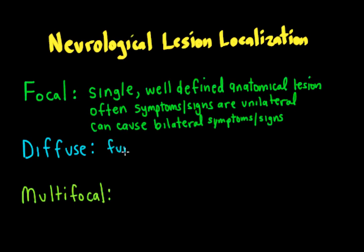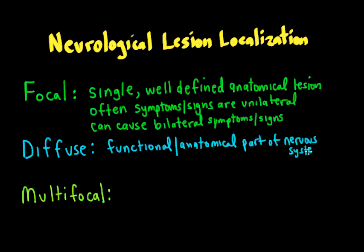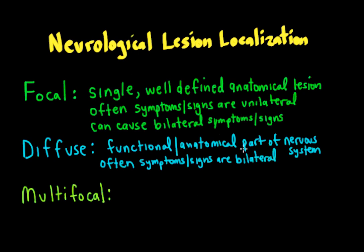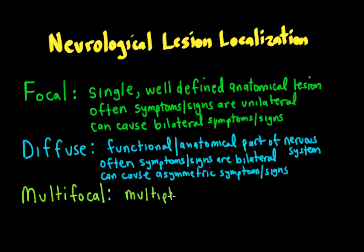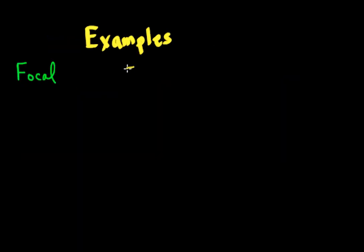For diffuse lesions, these affect a functional or anatomical part of the nervous system. Usually, since nervous system parts have a right and left, diffuse lesions produce bilateral, symmetrical symptoms and signs — but they can cause asymmetric findings, in some cases strikingly asymmetric, like in Parkinson's disease. Multifocal lesions are less common; these are just multiple focal lesions, but we want to consider diffuse first.